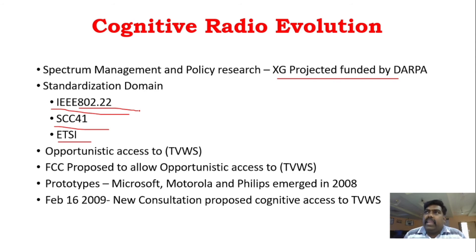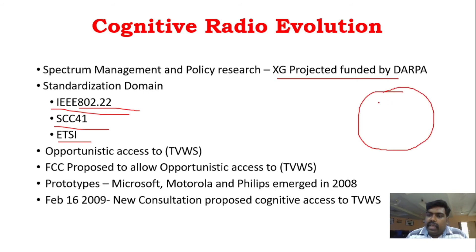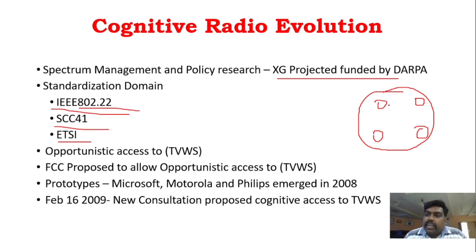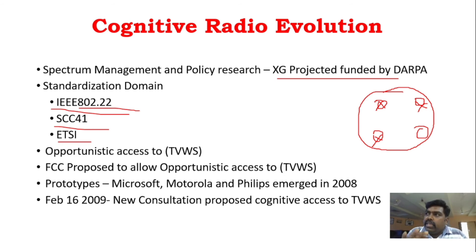What is Opportunistic Access? Opportunistic Access means checking whether the spectrum is free. If you take a complete spectrum, it will have spectrum holes. Where there is an opportunity — where the spectrum has primary user gaps and the secondary user can step in — that is called Opportunistic Access.